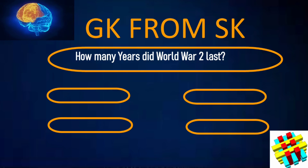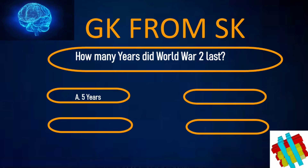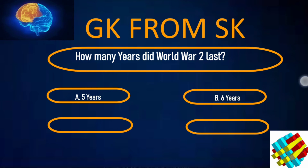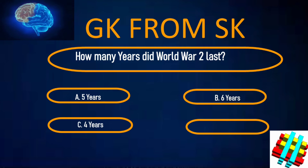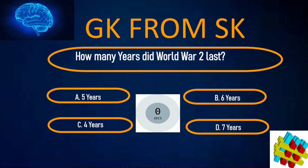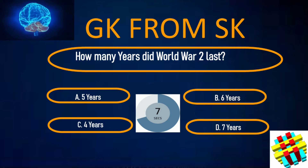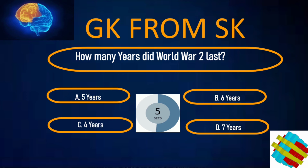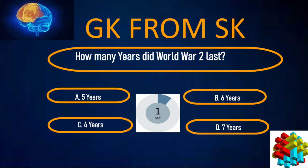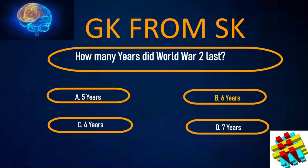How many years did World War II last? A. 5 years, B. 6 years, C. 4 years, D. 7 years. Your time starts now. Correct answer: B. 6 years.